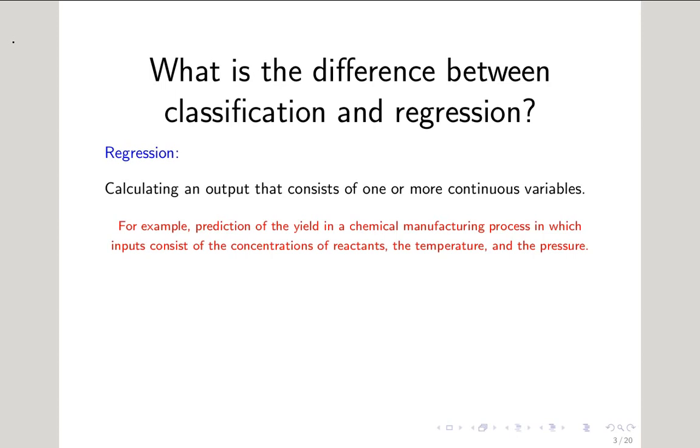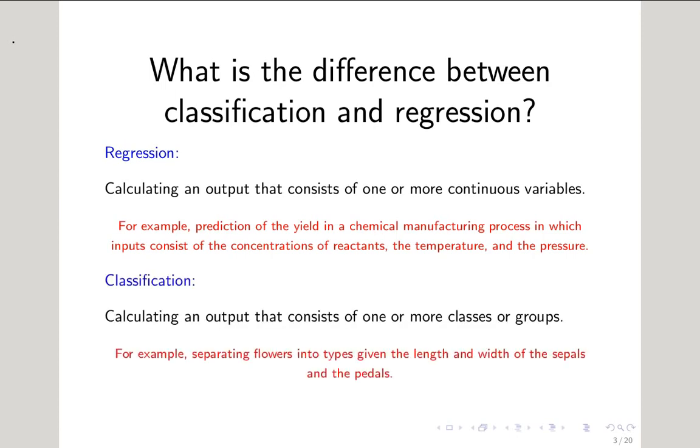In classification, we're trying to put each output into a class or a group. One example of this would be trying to classify a type of iris flower, using the length and width of petals of the flower, and determining if it is one of three types of iris. For example, iris setosa, iris virginica, and iris versicolor.